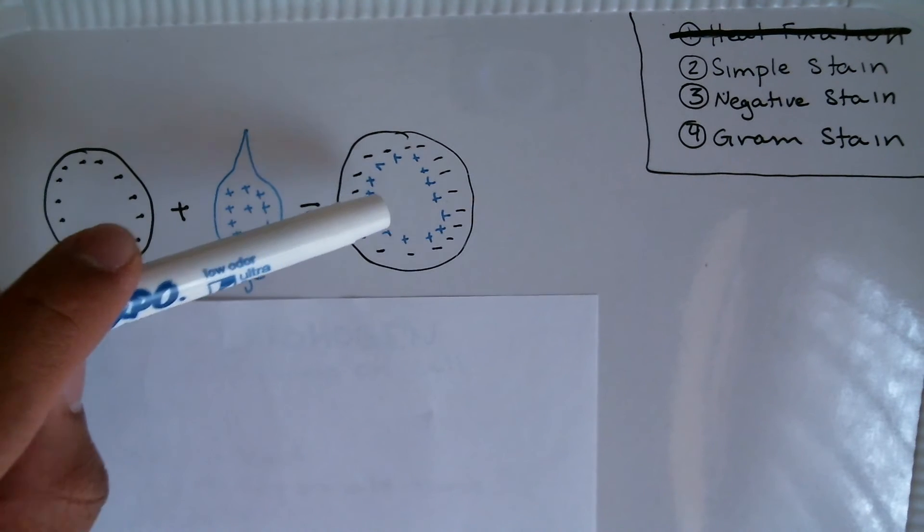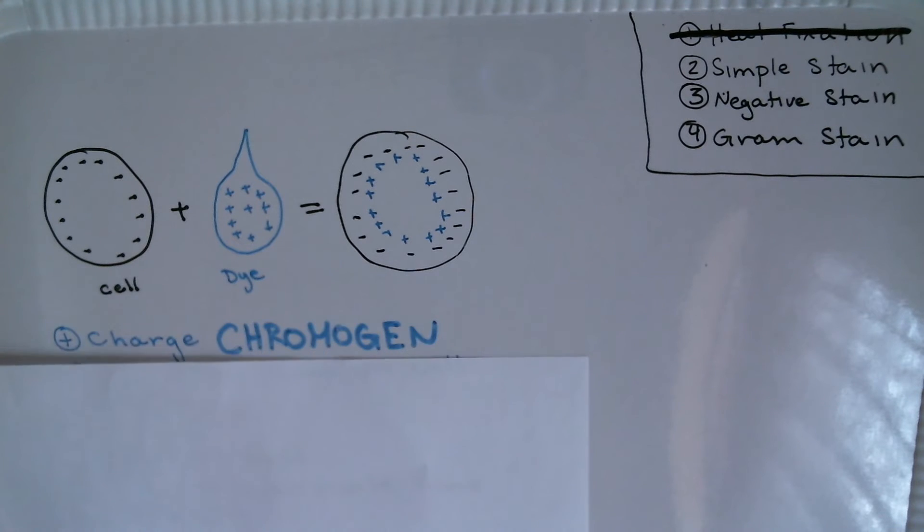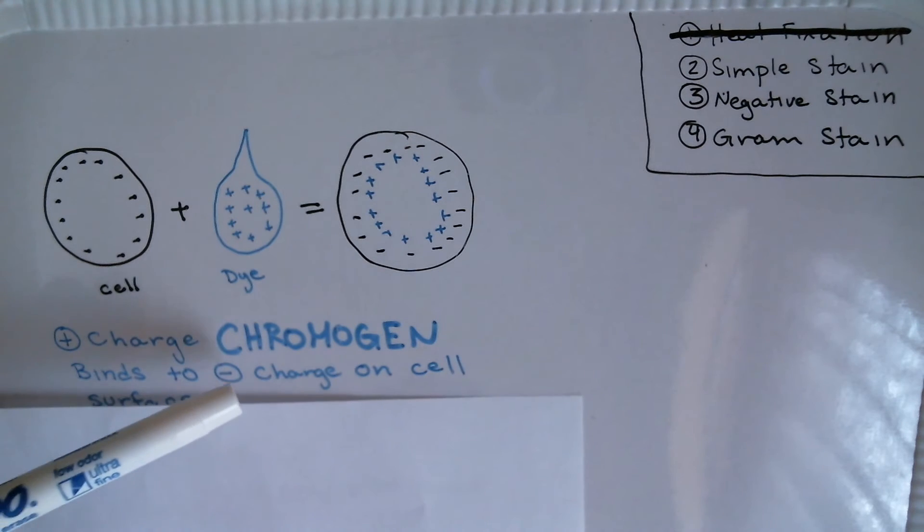That dye binds to the negative charges on the outer surface of the cell, giving it the color of the dye. That works by having a chromogen within the dye that's positively charged. As we know, opposites attract, and that's how the dye sticks to the cell by binding to those negative charges on the outer surface because that chromogen has a positive charge.